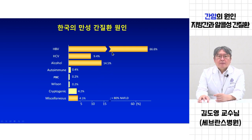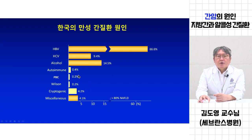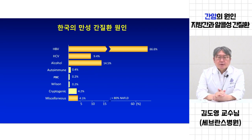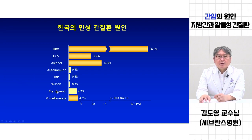한국인 만성간질환의 원인 제일 중요한 건 아직까지는 B형간염이다. 술이 2위입니다. C형간염이 3위인데, 앞으로 B형간염은 더 줄어들 거고 C형간염도 거의 바닥까지 내려갈 거고, 알코올은 점점 올라갈 거고, 비알코올 지방간질환이 미국이나 유럽이나 일본에서도 아주 중요한 만성간질환의 원인이 이미 됐습니다. 10년 20년 지나면 바이러스 원인보다 술하고 비알코올 지방간이 중요한 원인이 될 것이다라는 것이 공통된 의견이 되겠습니다.